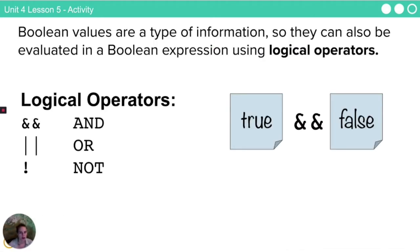So Boolean values are a type of information and they can also be evaluated in a Boolean expression using logical operators. Logical operators, here's a new vocabulary term, are and, or, and not.